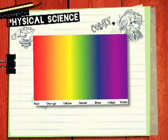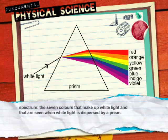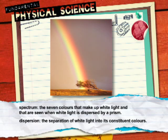White light is a combination of seven different colours: red, orange, yellow, green, blue, indigo and violet. The different colours of visible light can be seen in the spectrum formed when white light is dispersed through a prism or when a rainbow is seen.